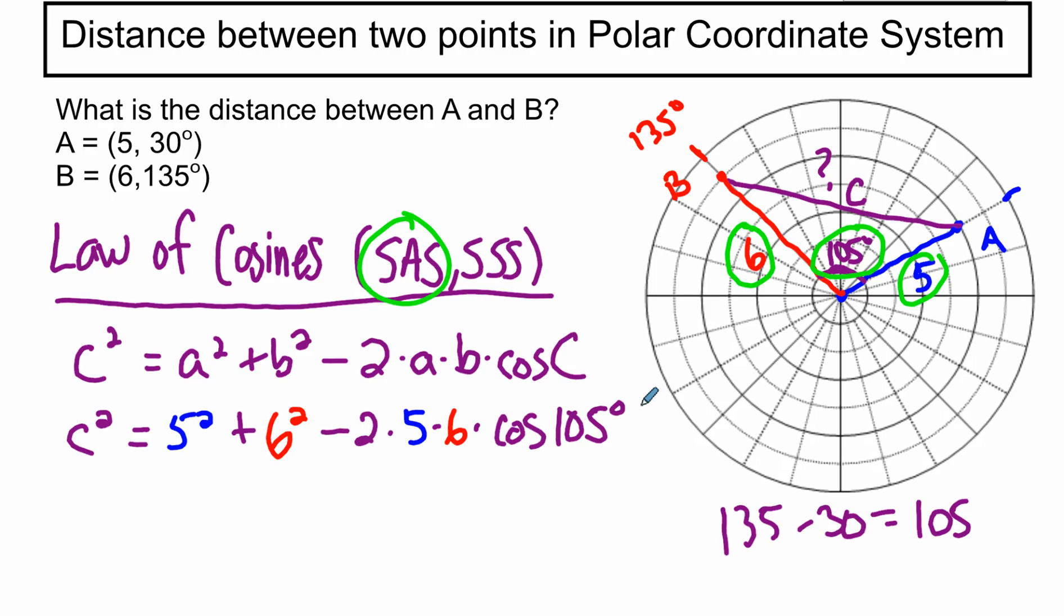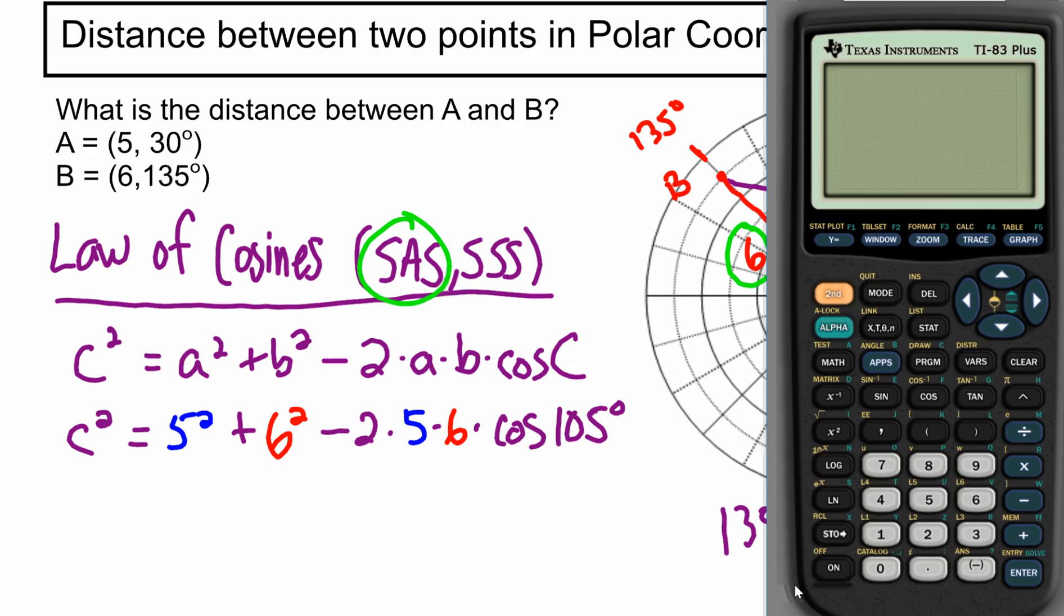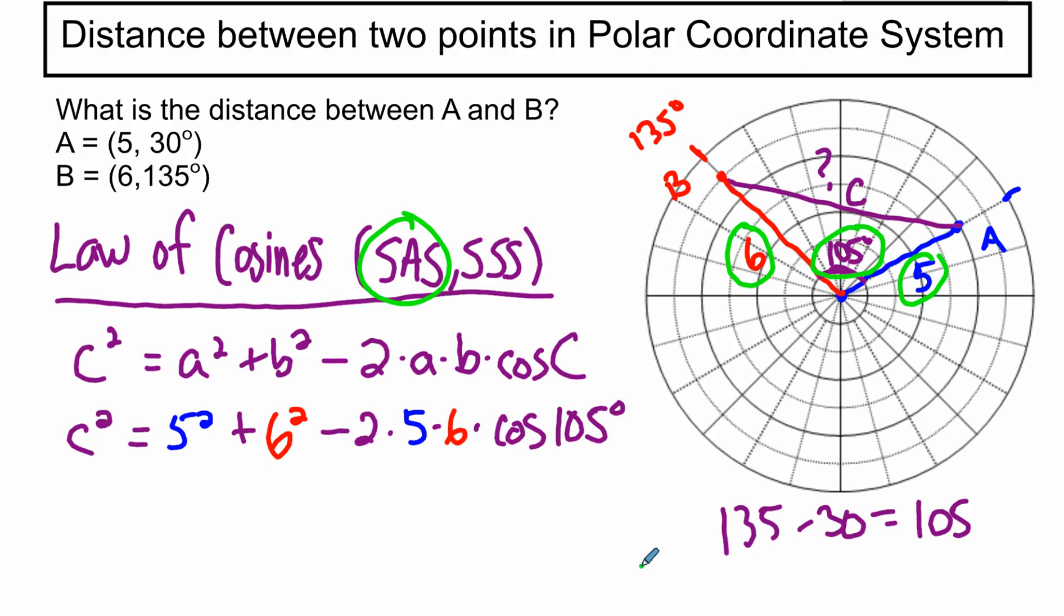So to save myself a little bit of time, I've already got this punched into my calculator. And we've got 5 squared plus 6 squared minus 2 times 5 times 6 times the cosine of 105. And I get 76.529. So back to this, we've got 76.529.